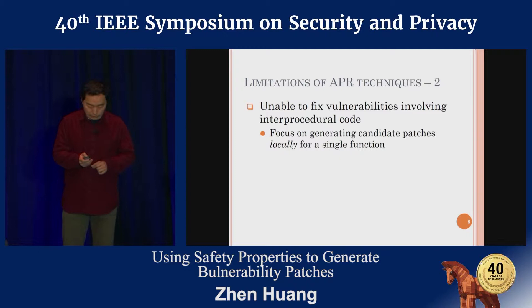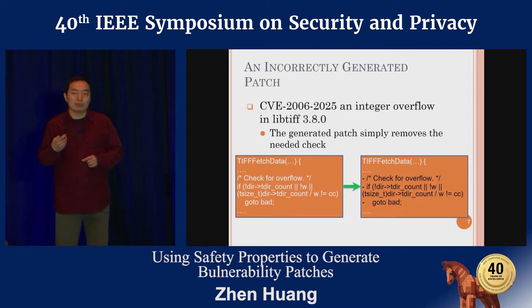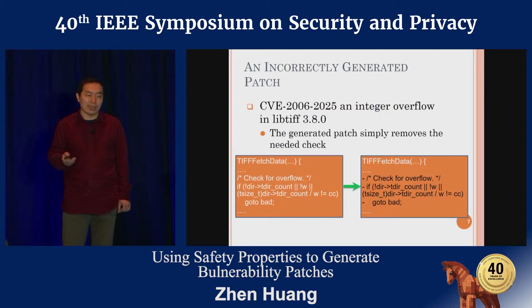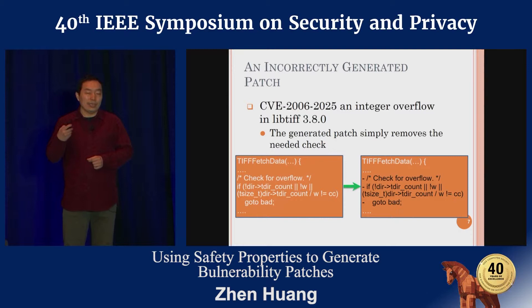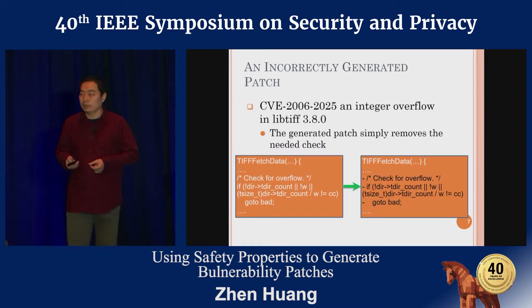A study published in 2015 confirms that most patches previously considered correctly generated by state-of-the-art APR techniques are indeed incorrect due to this limitation. We show one patch that is incorrectly generated: this patch removes a check for integer overflow in the code of libtiff in an attempt to fix an integer overflow. Due to the incompleteness of the test suite, this incorrect patch will simply not trigger the test input that would reveal the integer overflow, and thus it will be incorrectly considered correct.